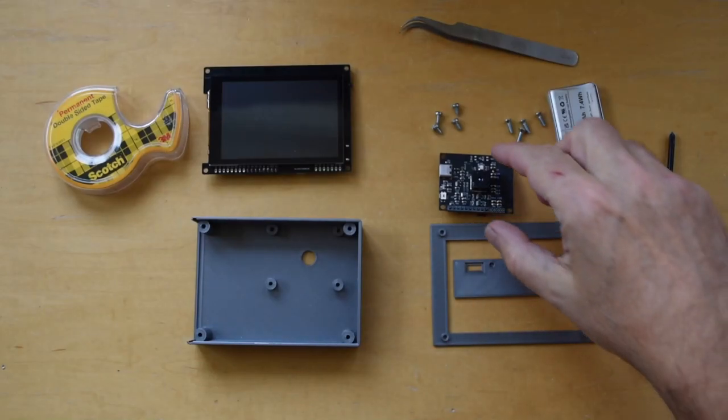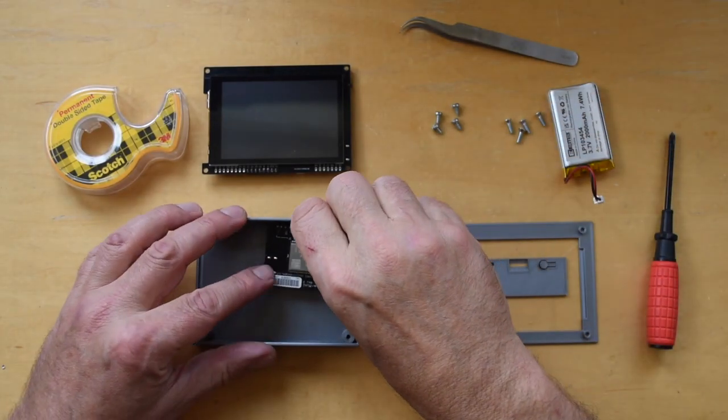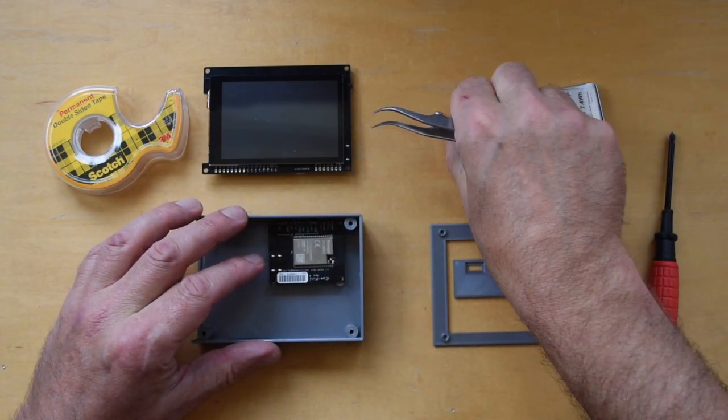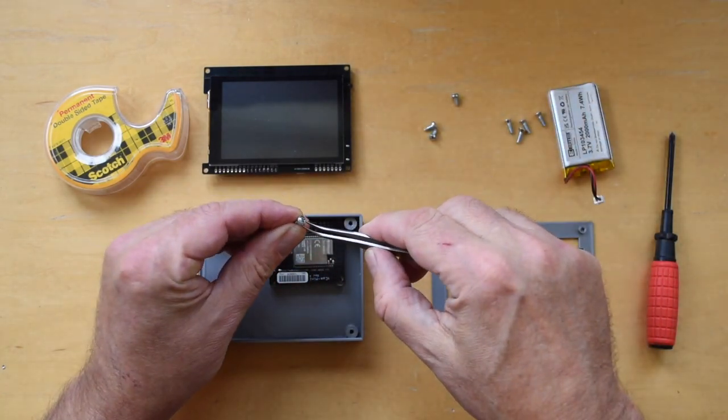Finally, we can assemble the camera. Use the pan head screws to mount TCAM Mini in the enclosure. Don't fully tighten the screws until they're all in place and don't over tighten.